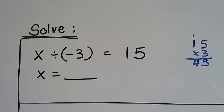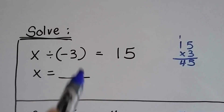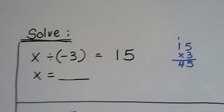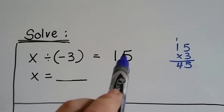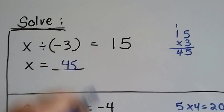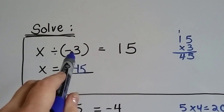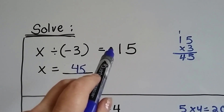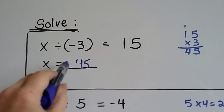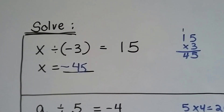If it says solve and it says x divided by negative 3 equals 15, we can just do the inverse operation and multiply. We can do the number first, then figure out the sign second. 3 times 15 is 45, so we know the answer is 45. But the answer is positive 15, and we've got a negative in the equation. To get a positive answer, we need like signs — that means x is going to have to be negative 45, so it's like the negative 3, and our like signs give us a positive answer.